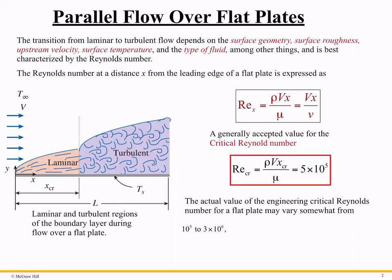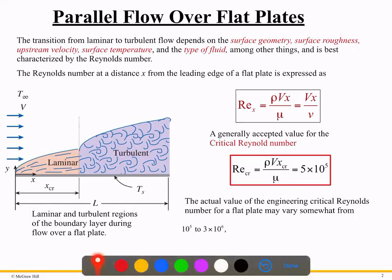Parallel flow over a flat plate — let's understand what it is. This is the flat plate, and this is the parallel flow, meaning the flow is going in the same direction as the plate. The flow velocity is V and the temperature is T, so these are the given conditions.